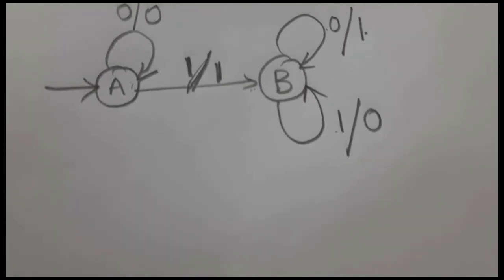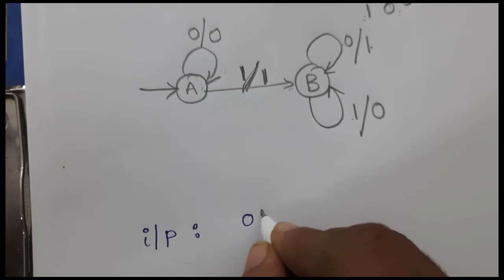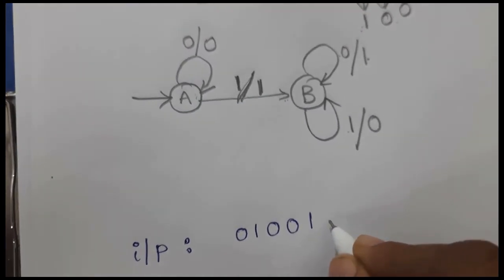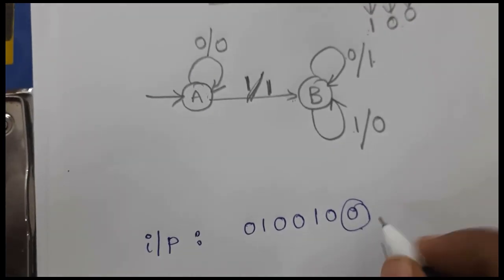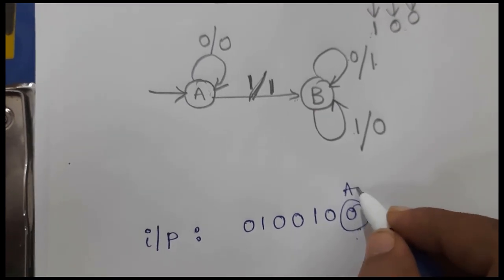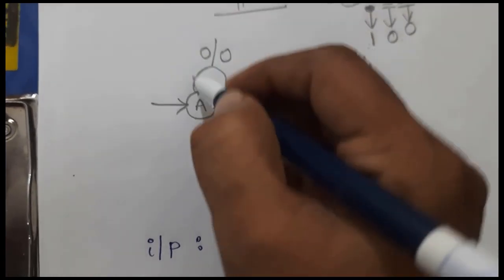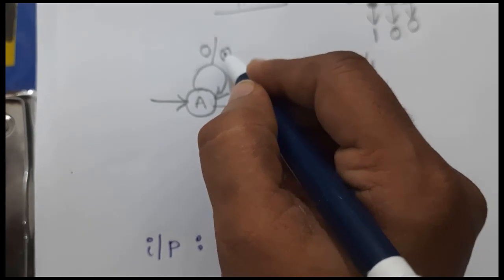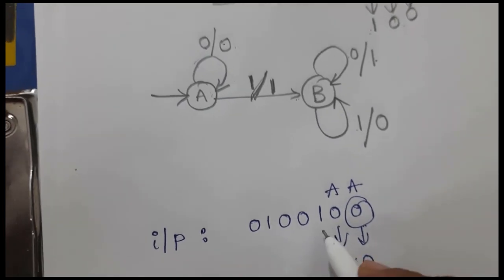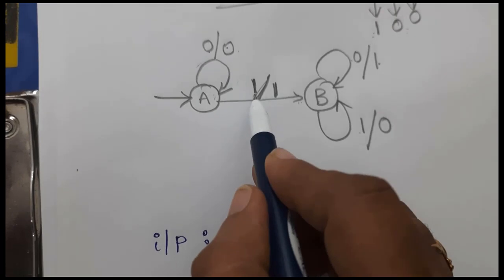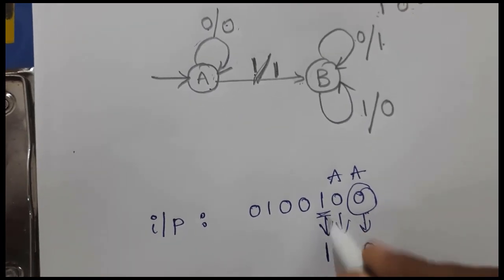Now let me verify with another input binary string: 0 0 1 0 0 1 0. Starting from the LSB, the first bit is 0 — it stays in state A with output 0. The next bit is also 0 — again state A with output 0. Then 1 comes as input to state A, so the output is 1 and we transition to state B, because there is no change for the first 1.